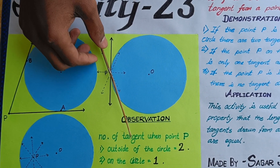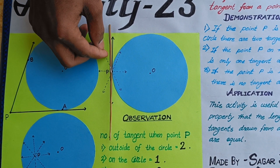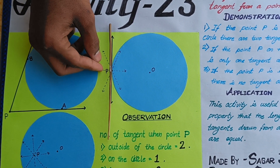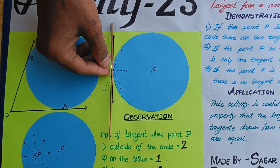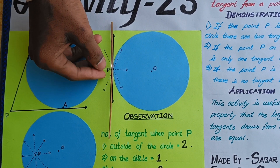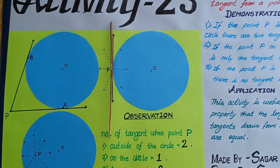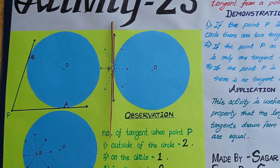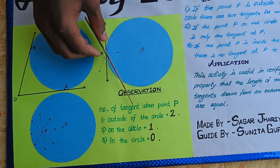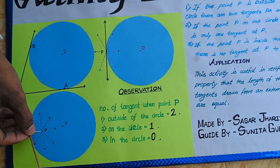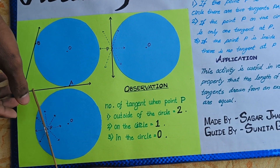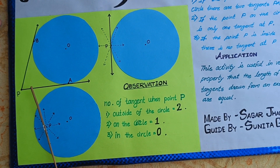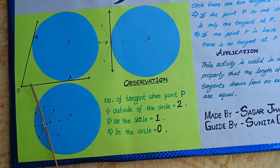In the second circle, when point P is on the circle, only one tangent is formed. And when point P is inside the circle, the number of tangents formed is zero.